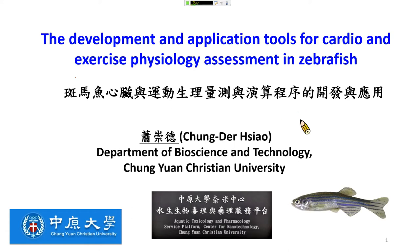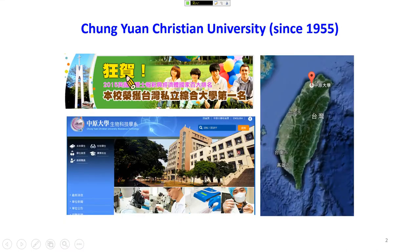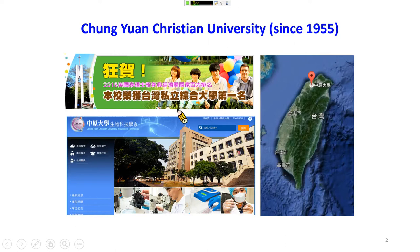I am Professor Chong De Xiao from the Department of Bioscience and Technology, Zhongyuan Christian University, which was established in 1955. The location is close to Taipei. Our department mostly focuses on rodents and also uses zebrafish for biomedical research. We are ranked number one among private universities in Taiwan.